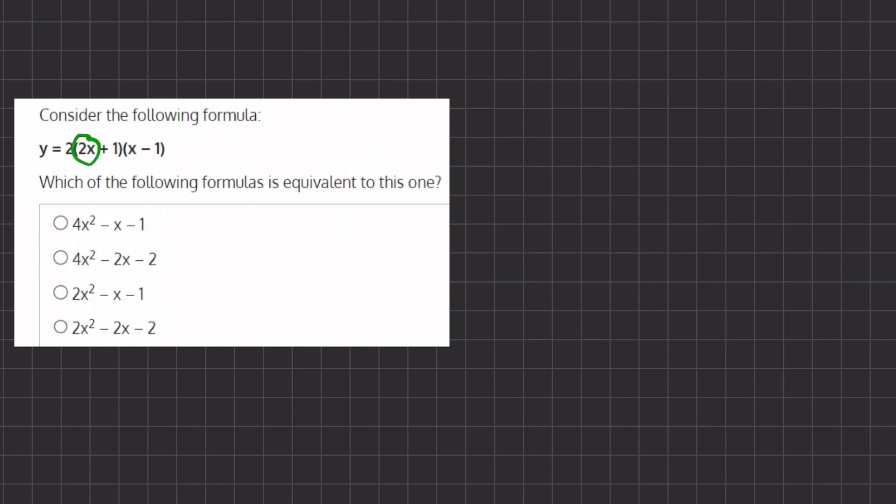That means we will first take our 2x and multiply it to our two terms in the second parentheses and then we will be taking our value 1 and multiplying it to the two values of our second parentheses.